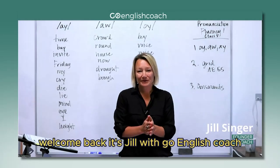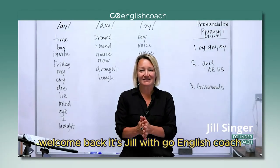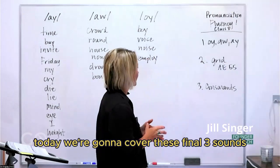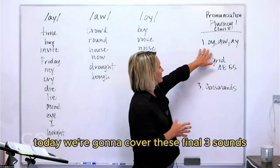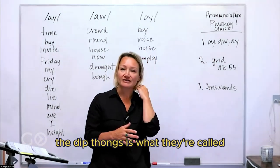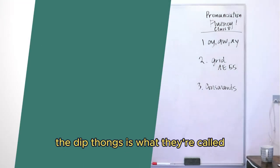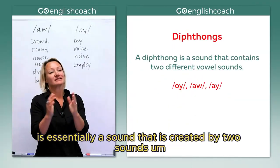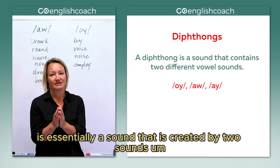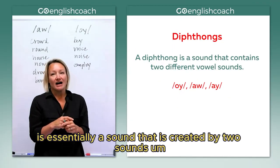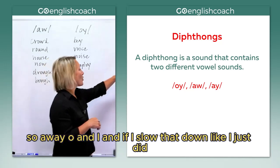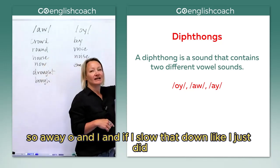Hi everybody, welcome back. It's Jill with Go English Coach. Today we're going to cover these final three sounds — the diphthongs, as they're called. What a diphthong is, is essentially a sound that is created by two sounds: oi, au, and ai.